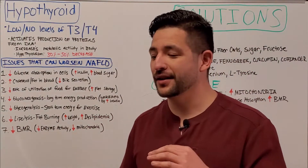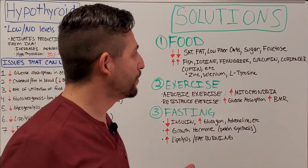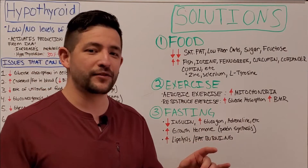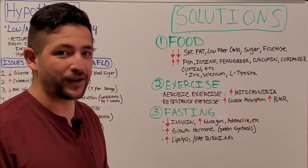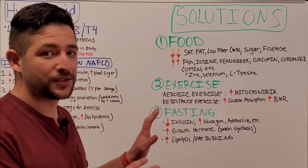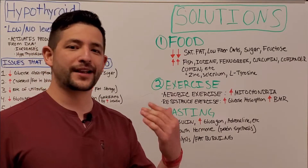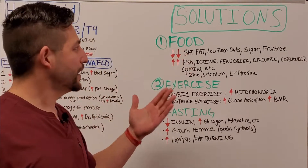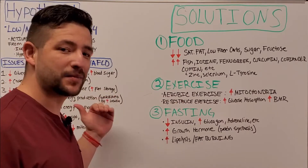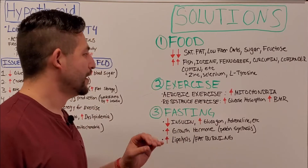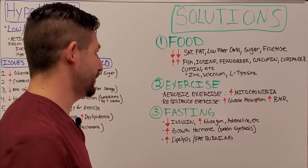Now that we've talked about all the ways hypothyroid can negatively affect a fatty liver, let's talk about some solutions. If you've been diagnosed with Hashimoto's or any other hypothyroid condition and you've been given medication, make sure you take that medication — this isn't meant to substitute proper medical treatment, only to augment it. We're going to focus on three things: nutrition, exercise, and fasting.